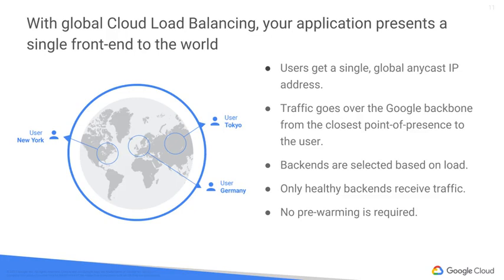With cloud load balancing, a single Anycast IP frontends all your backend instances in regions around the world. It provides cross-region load balancing, including automatic multi-region failover, which gently moves traffic in fractions if backends become unhealthy. Cloud load balancing reacts quickly to changes in users, traffic, backend health, network conditions, and other related conditions.